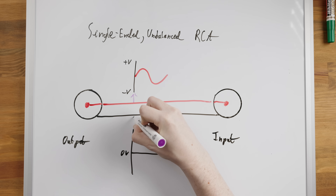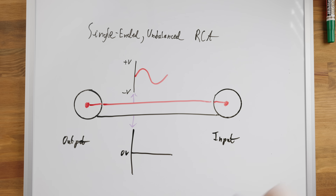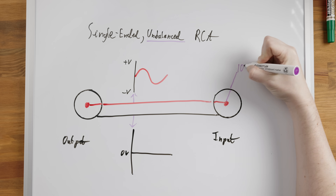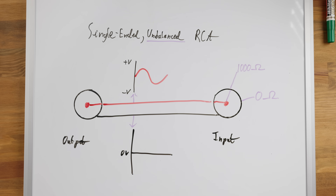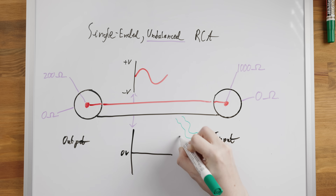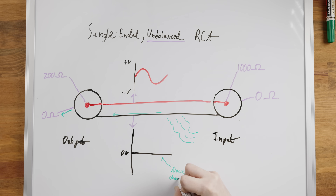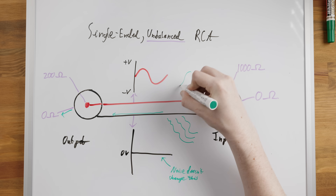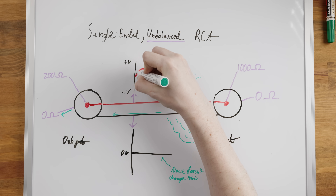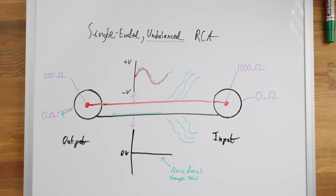This setup works but is unfortunately susceptible to external interference because it is unbalanced. It's called unbalanced because the impedance of each connection to ground is not the same, and so external electromagnetic noise picked up by the two conductors on the cable will produce different voltages on each. Noise picked up by the ground wire has a very low impedance path to ground and so it is effectively drained almost entirely, but not on the positive connection which has a high impedance path to ground — so that noise remains.